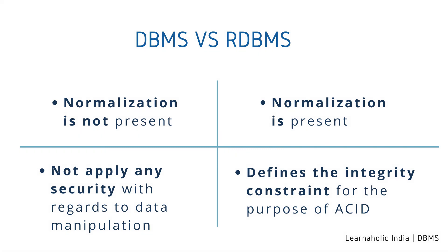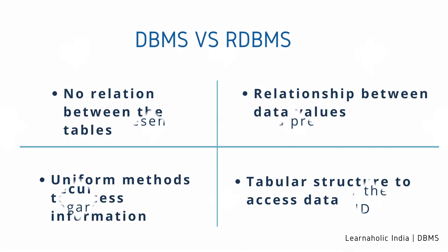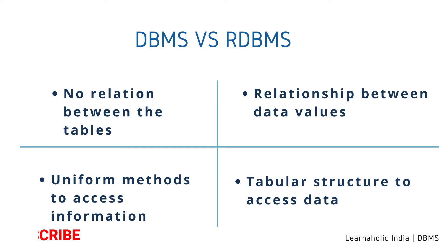Normalization is not present in DBMS, whereas normalization is present in RDBMS. DBMS does not apply any security with regards to data manipulation, whereas RDBMS defines the integrity constraint for the purpose of ACID properties. DBMS uses a file system to store data, so there will be no relation between the tables, whereas in RDBMS, data values are stored in the form of tables, so a relationship between these data values will also be stored in the form of a table.